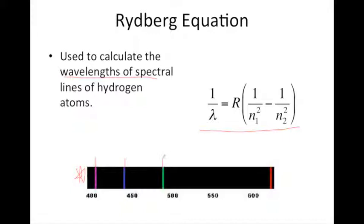In the Rydberg equation, R is the Rydberg constant, which you can see here, and the units are meters to the negative 1, and n1 and n2 were whole number integers, so like 2, 3, 4, 5, 6, where n1 is always less than n2.